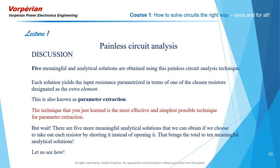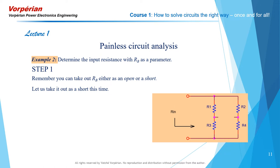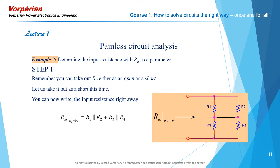Let us determine the input resistance with Rb as a parameter, but take out Rb as a short instead of an open — which is what we did at the very beginning of the course. So let us take it out as a short — there it goes, in comes a short. We can now write the input resistance right away with Rb equal to zero, and that is R1 parallel R2 in series with R3 parallel R4. This is the partial credit answer, the value of the input resistance for Rb equal to zero rather than Rb equal to infinity.